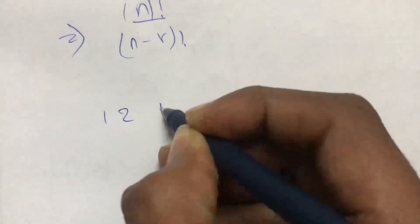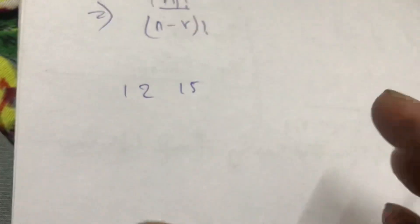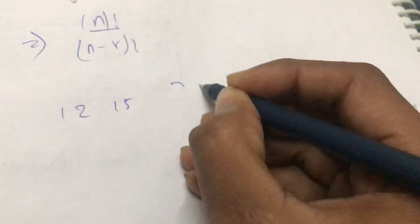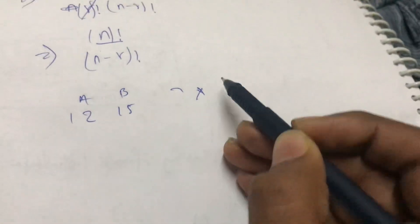So let me take a test case and explain it to you guys. Let's suppose the first test case is 12 and 15. This is A and this is B, so you have to determine X.